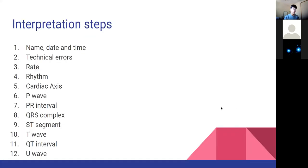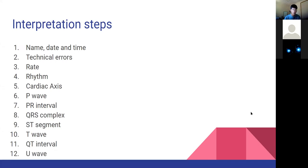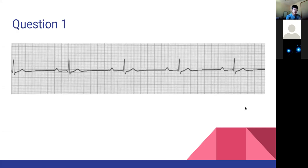We'll move on to ECGs now. The ECG is a lot to take in, but the best way is a step-by-step approach: looking at your rate, rhythm, cardiac axis, and each segment, wave, and interval. I have about nine ECGs here, and we'll go through them with explanation on how to approach them.